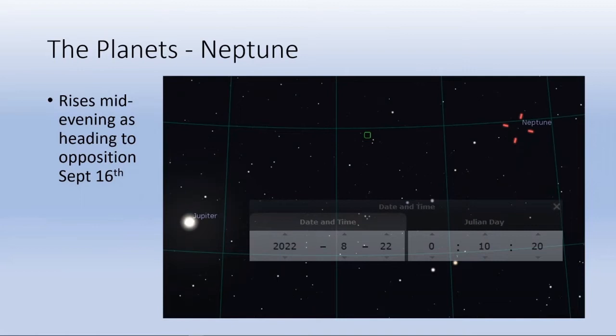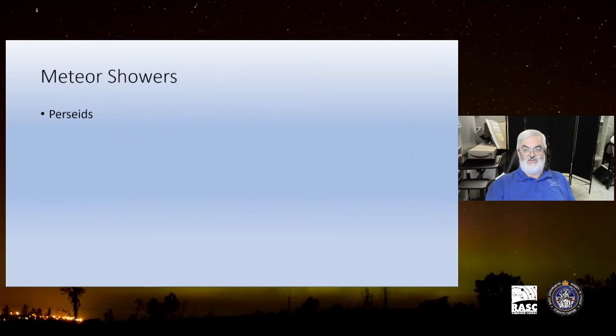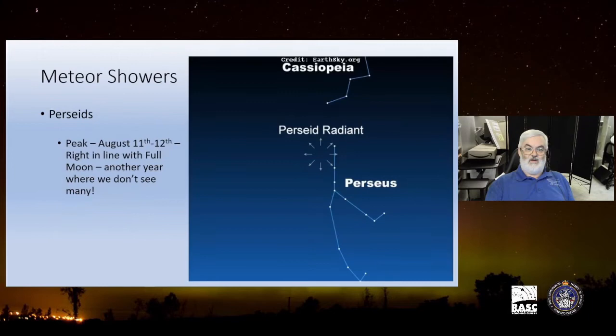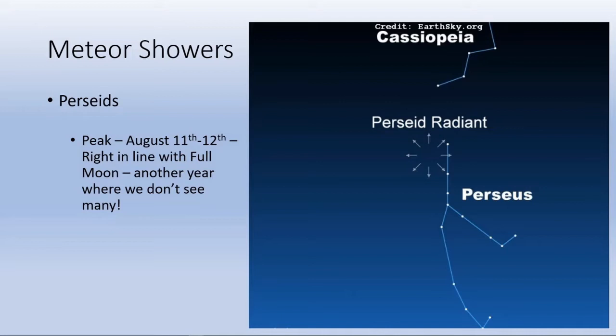Now we come to why I said earlier that the moon is going to be impacting something. A lot of us love to go out for the Perseids, and the Perseids are going to be August 11th, 12th, and 13th. The 12th and 13th is technically the peak, and full moon is on the 12th. So of course another year where you won't see too much unfortunately. But you can see where the radiant is, out of Perseus, just below Cassiopeia there. I don't recall how many times in the years that I've wanted to go and observe these Perseids and have the moon interfering.